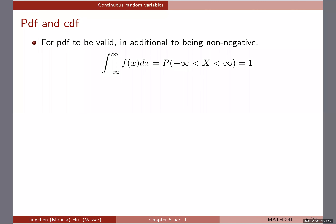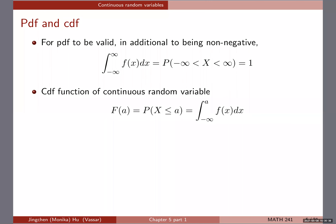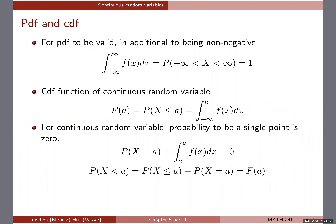Now we can define the CDF. The CDF, capital F, uses a small a to represent any value we can think of. By definition it is the probability of the random variable X being less than or equal to a. Instead of doing a summation up to a as in the discrete case, we're doing integration from negative infinity — the lowest possible value — up to the value a. There is another key property: for a continuous random variable, the probability of taking a single specific point is actually zero.